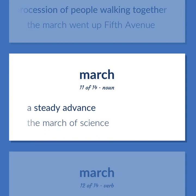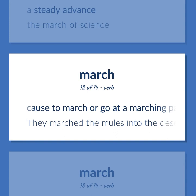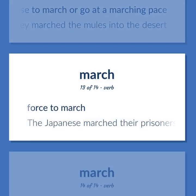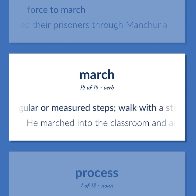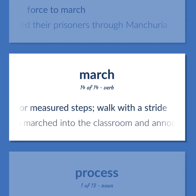March: a steady advance. Example: the march of science. Cause to march or go at a marching pace. Example: they marched the mules into the desert. Force to march. Example: the Japanese marched their prisoners through Manchuria. Walk fast with regular or measured steps, walk with a stride. Example: he marched into the classroom and announced the exam.